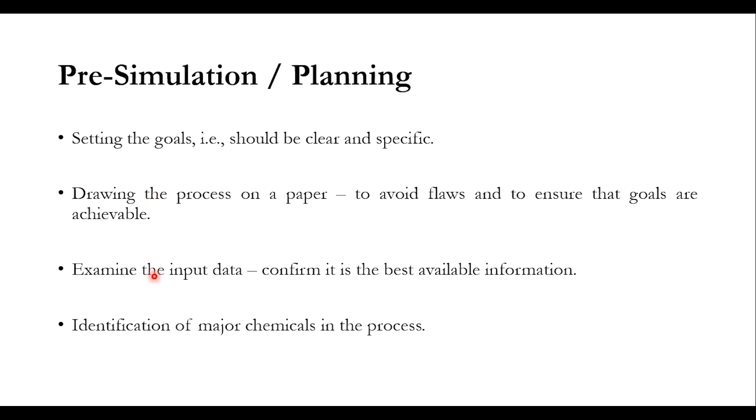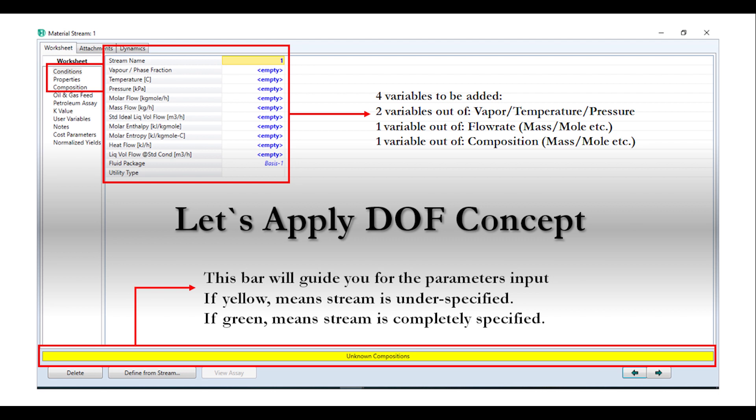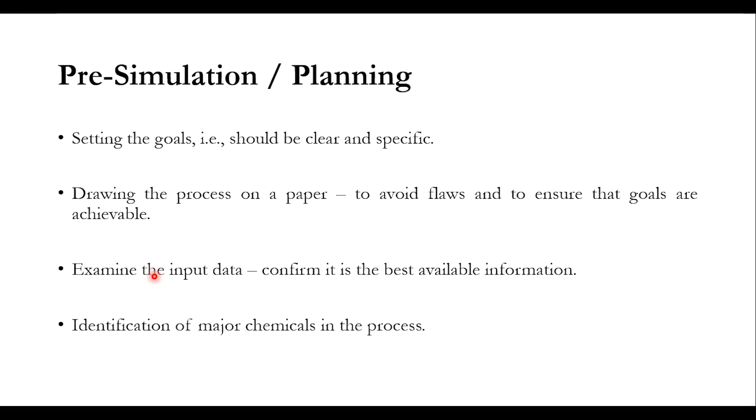Examine the input data—confirm it's the best available information. Is it enough for simulation? We've discussed degree of freedom analysis: to define a stream we need temperature, pressure, flow rate, and composition. Then identify major chemicals in the process. Can we go with conventional components in AspenPlus or do we need hypothetical or pseudo components? This identification is necessary before doing the simulation.